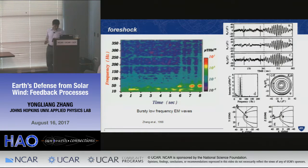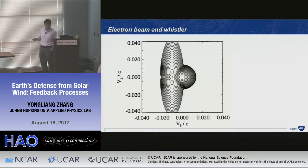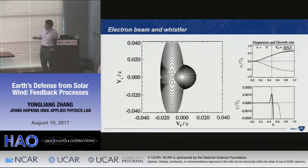Why do we see these bursty waves? Observations show there are electron beams in the foreshock. The model uses a cold plasma representing solar wind and a hot electron beam with temperature anisotropy — perpendicular temperature higher than parallel. This plasma system is unstable to whistler waves. A linear dispersion calculation shows two branches, one unstable with a positive growth rate over a very limited K-vector range.